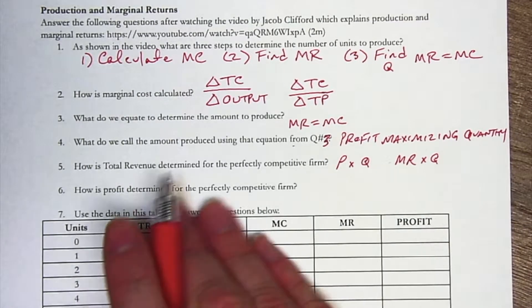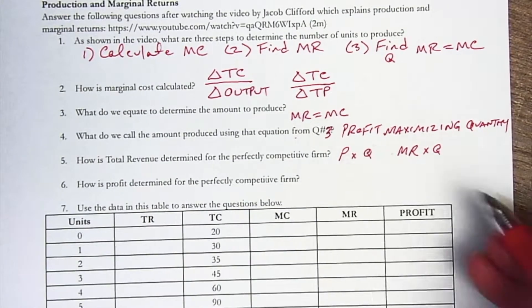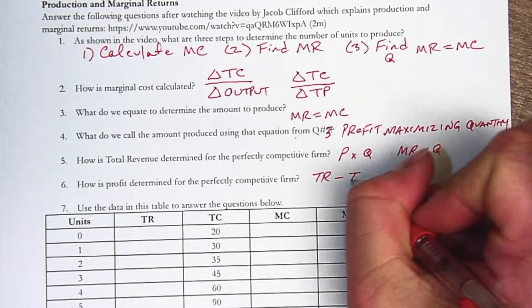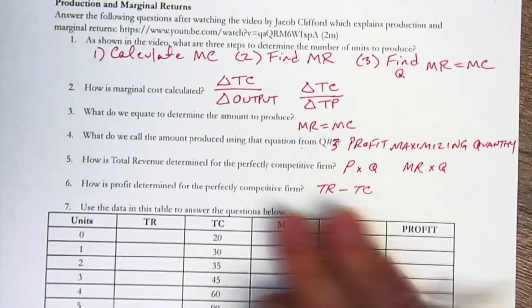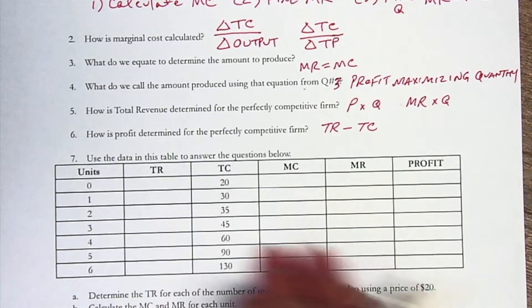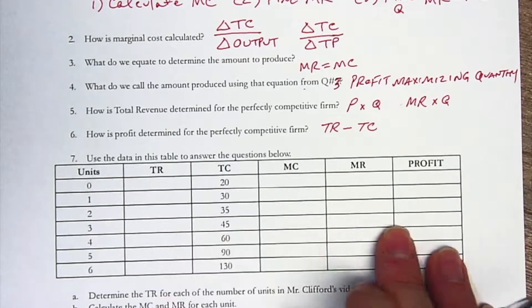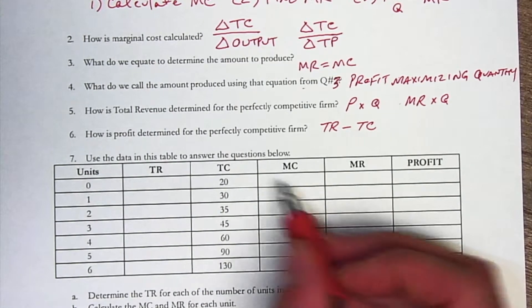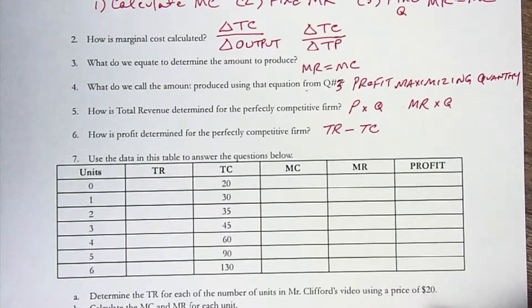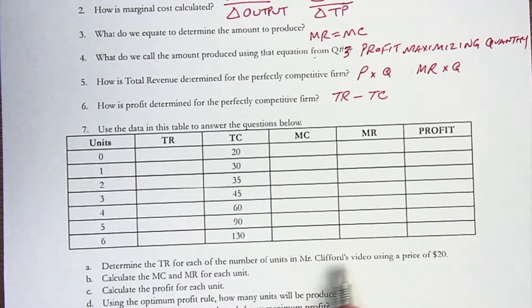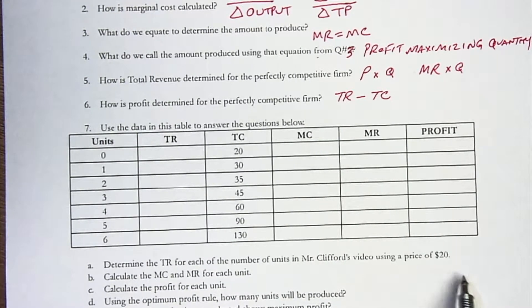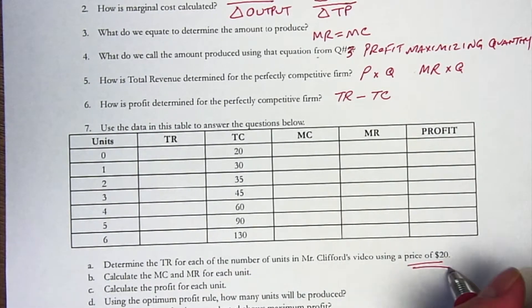And how is profit determined for the perfectly competitive firm? That would be total revenue minus total costs. So now we're going to use the data in this table to answer the questions below. First thing we're going to do is fill out the table: total revenue, total costs, marginal costs, marginal revenue, and profit. These are the number of units in Mr. Clifford's video using a price of $20.